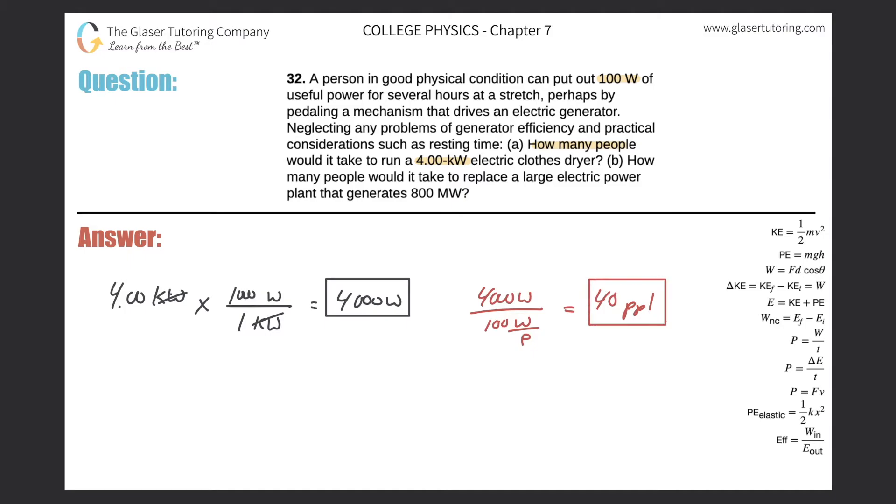And, you know, in terms of how long the clothes dryer runs, I mean, it might run for about an hour. So I don't think anybody needs necessarily any rest for that hour. But so now for letter B, it says how many people would it take to replace a large electric power plant that generates 800 megawatts? So first thing is, let me write letter A here.